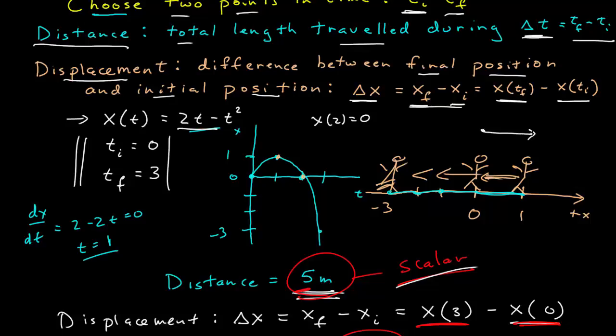So that's essentially the time it took the person to walk to one meter, x equals one, and then back to where the person started from. The total distance traveled would be two meters, while the displacement, which is the difference between the initial and final position, is zero, because the initial and final position was the same.